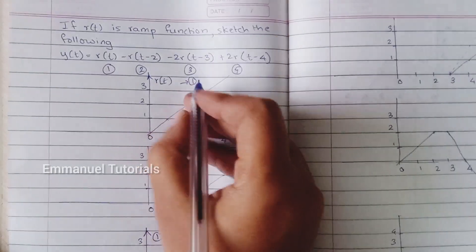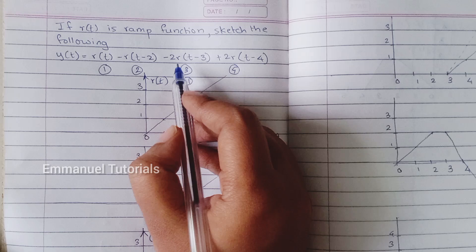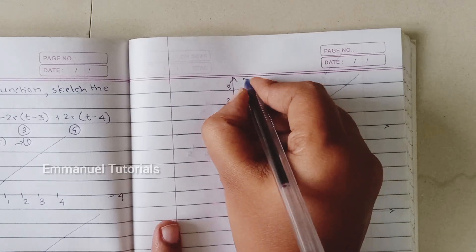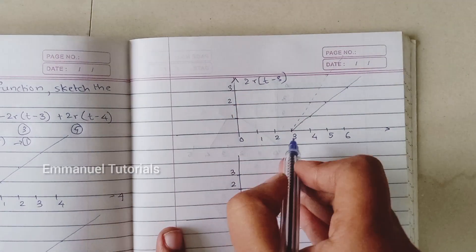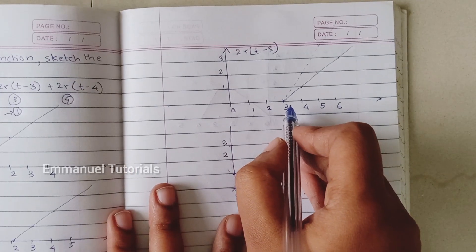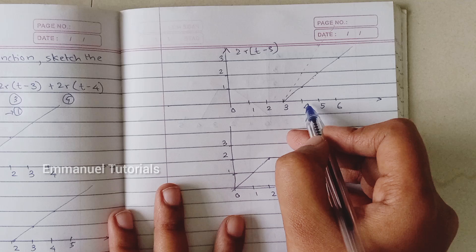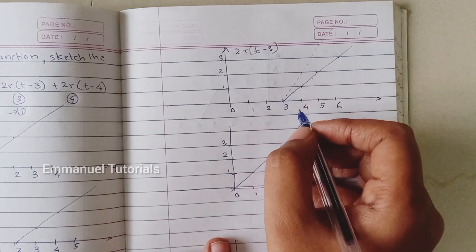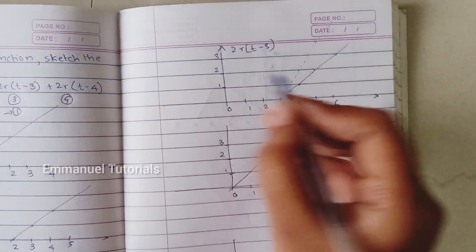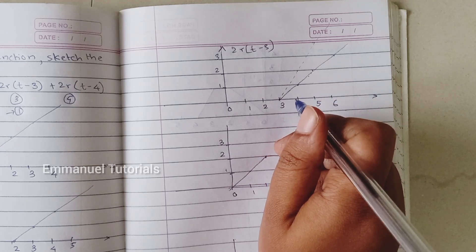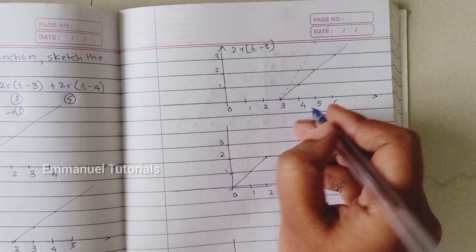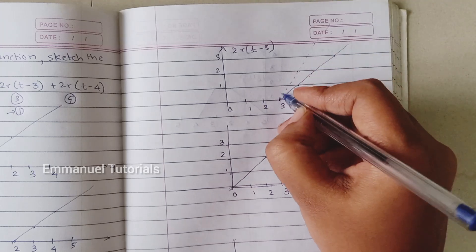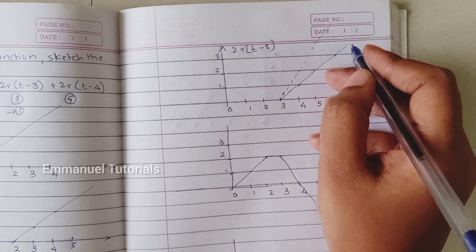The third part of the signal is a shifted and scaled version — delayed by 3 and amplitude scaled by 2, giving 2R(t−3). Shifting the ramp signal to the right by 3 means it starts at T=3. Without scaling: at T=4 amplitude is 1, at T=5 it's 2, at T=6 it's 3. With the factor of 2: at T=3 it's 0×2=0, at T=4 it's 1×2=2, at T=5 it's 2×2=4, and so on.